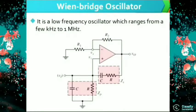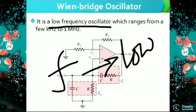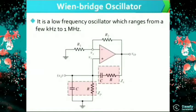The Wein Bridge Oscillator is a very low frequency oscillator — that means its frequency will be very low, and its range will be between a few kilohertz to 1 megahertz.